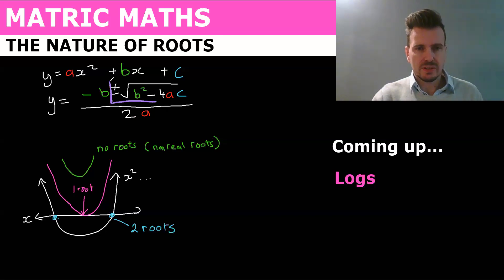This is the key to the nature of roots. Why? Because of this plus and minus. So when we solve for a quadratic, you know we always get two answers.